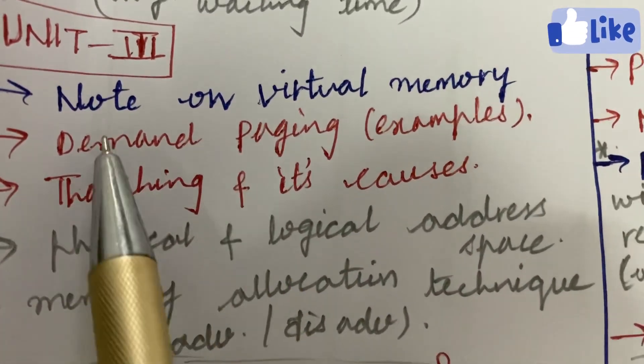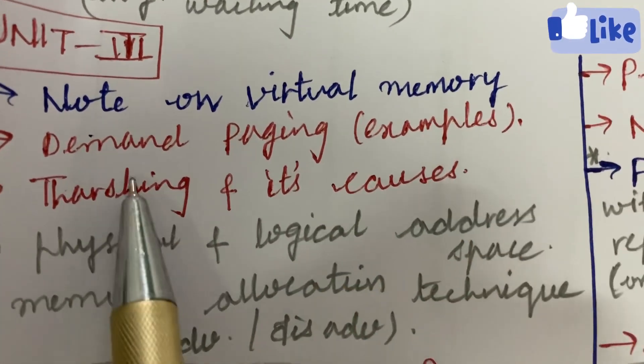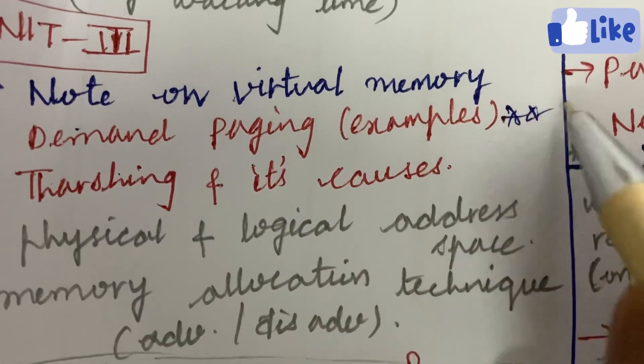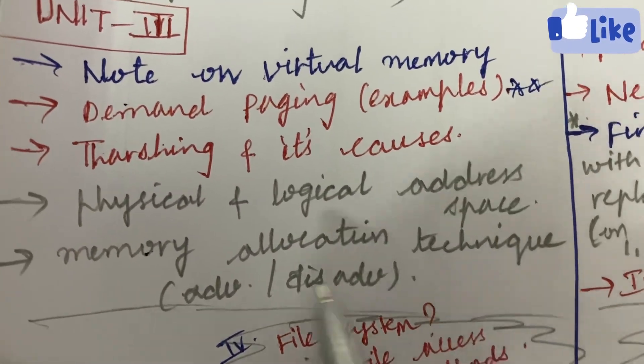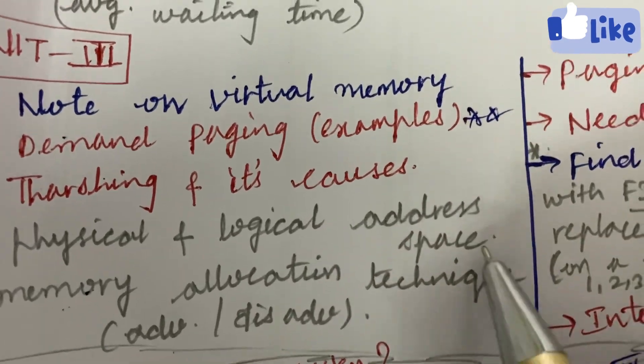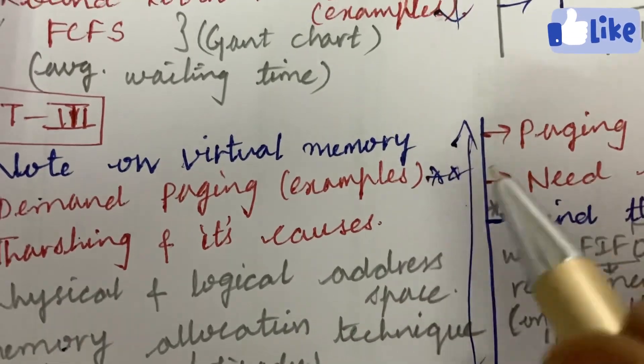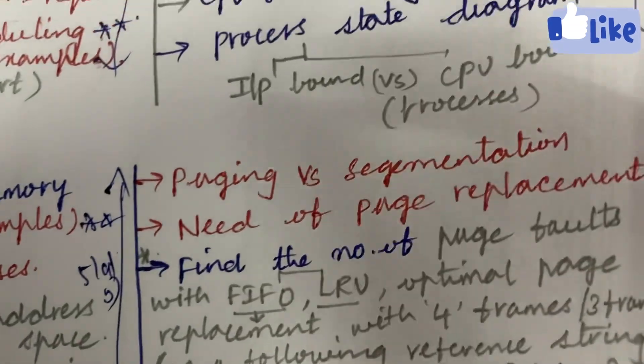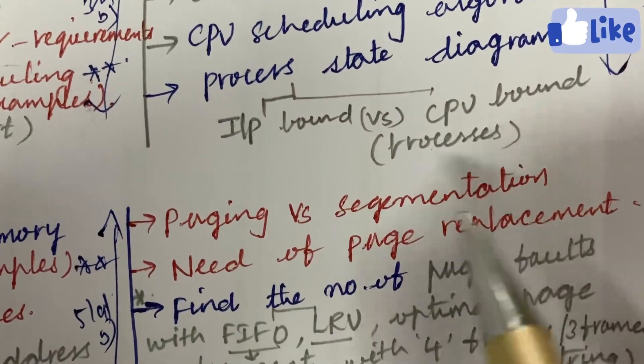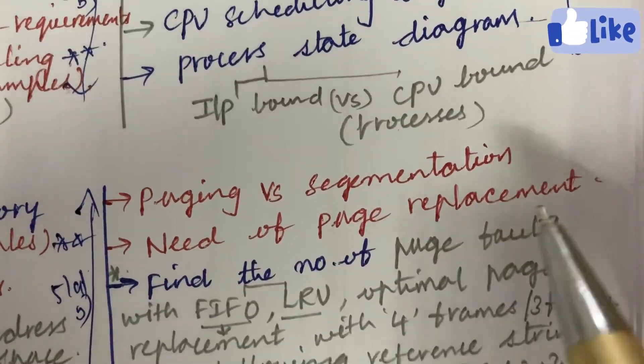Let's look at Unit 3. Unit 3 is also very important. Note on virtual memory and demand paging and the examples, and thrashing and its process, and the physical and logical address space and memory allocation technique advantages and disadvantages. From this part you can expect 5A as well as 5B.